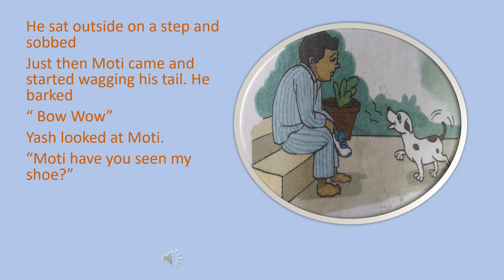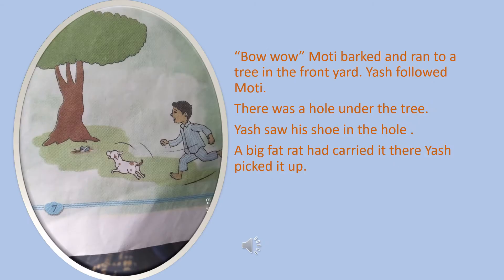Bow wow! Yash looked at Moti and asked, 'Moti, have you seen my shoe?' Bow wow! Moti barked and ran to a tree in the front yard. Yash followed Moti. There was a hole under the tree. Yash saw his shoes in the hole. A big fat rat had carried it there. Who had carried Yash's shoe to the hole? A big fat rat carried the shoe to the hole.